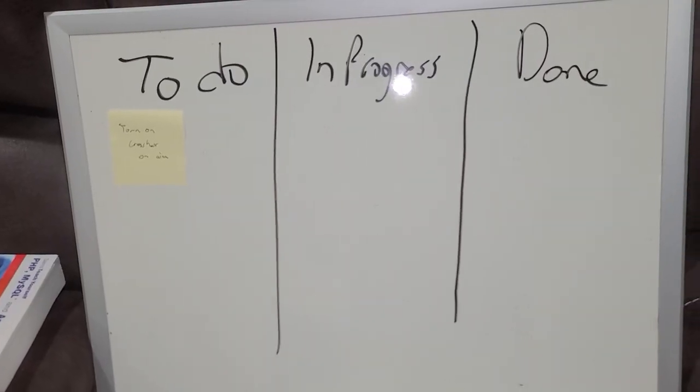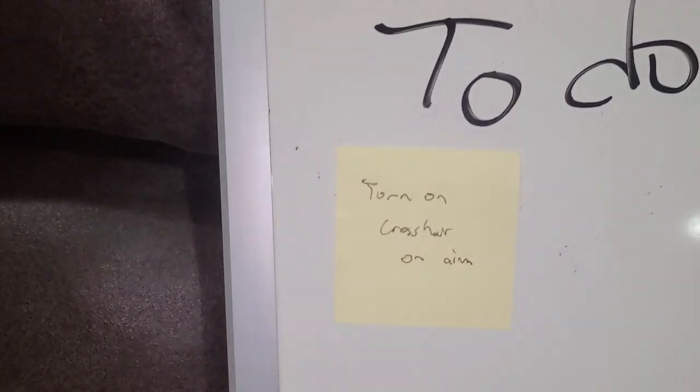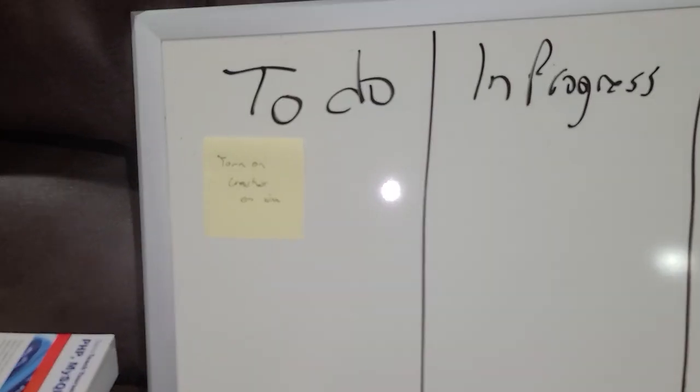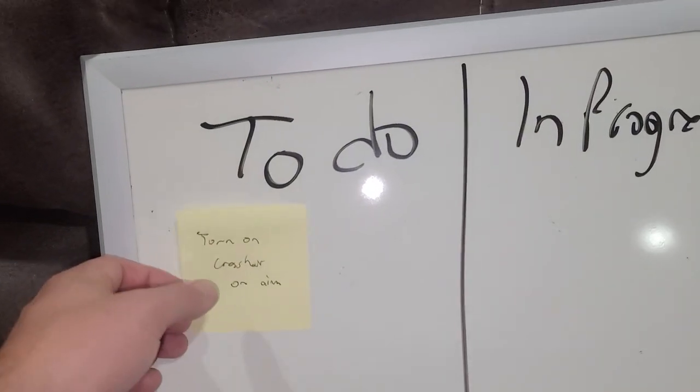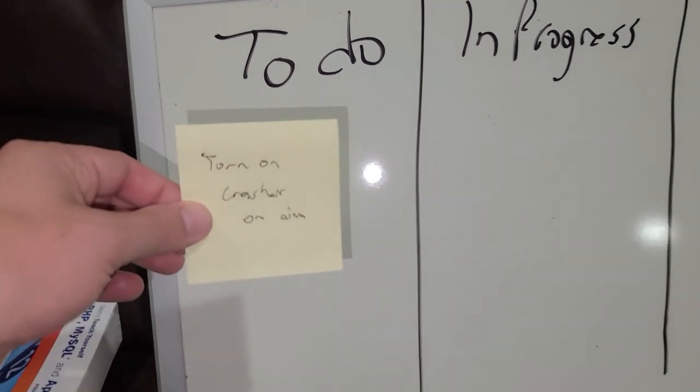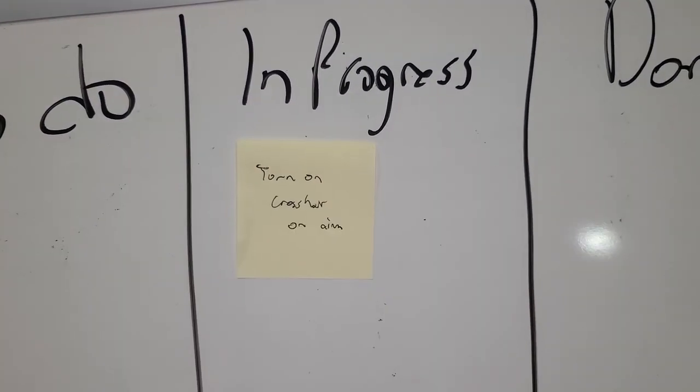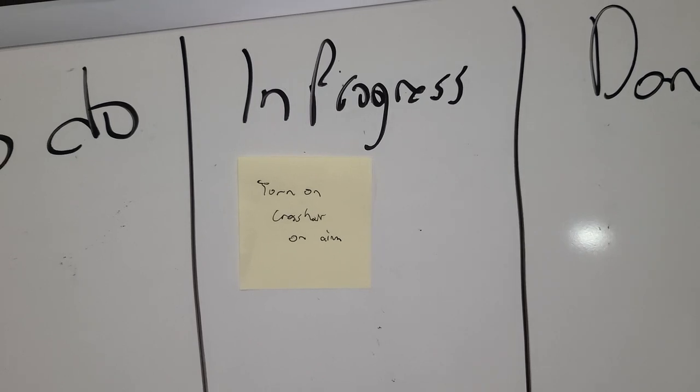Let's take a look at my note — 'turn on crosshair on aim' — currently in To-do. When I'm ready to start working on that, I'm literally going to pull it out and stick it in the In Progress column. Then I'm going to go back to Unity and begin working on it. I might create a new branch from my main branch, name it something specific that I can tie back to that post-it note, and begin implementing the functionality.